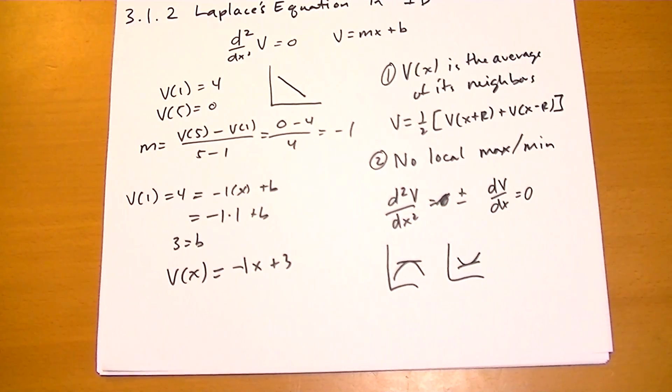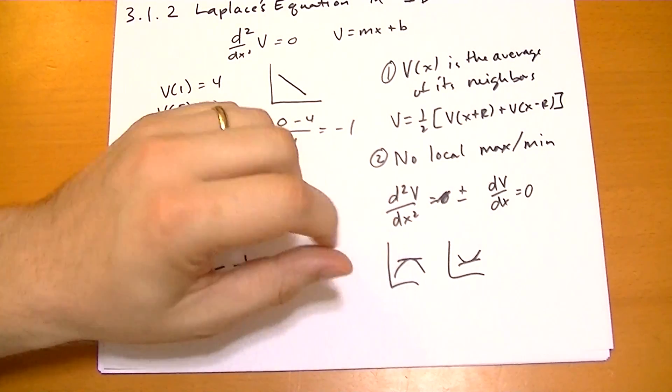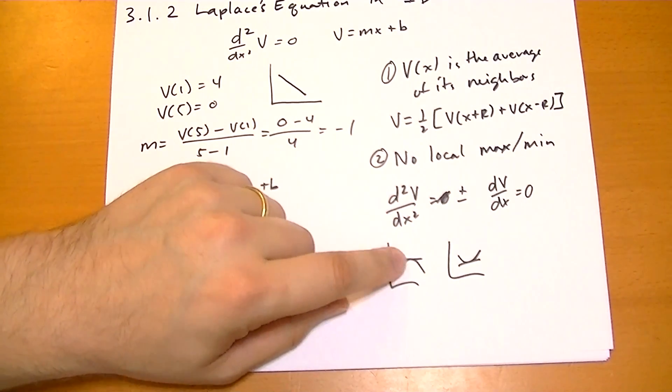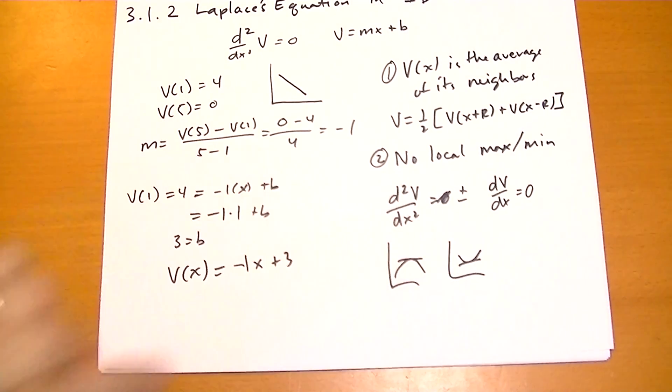But the acceleration is going to be positive or negative at those points. And if you have a negative acceleration, that means you're at a maximum and a positive one means you're at the minimum.